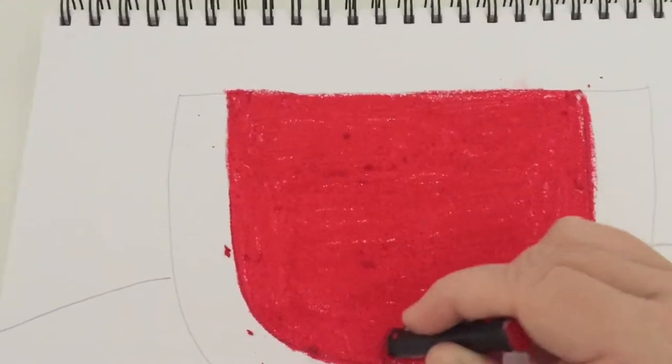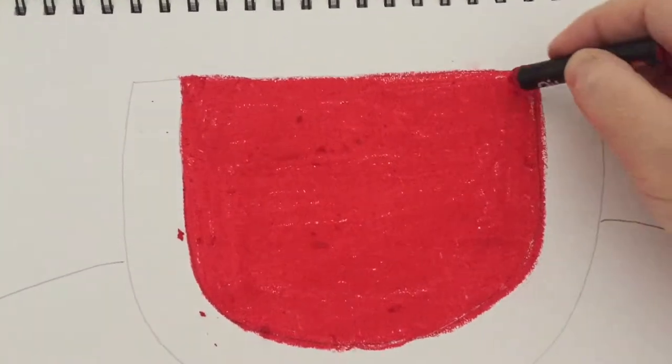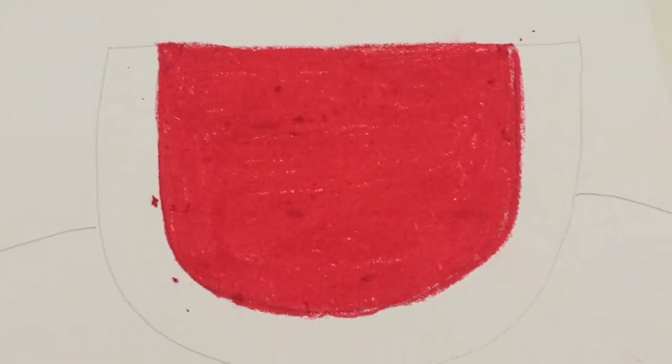We're going to colour that inside part of the semi-circle. We need to colour that whole section in, leaving no white spaces and make sure we've got that nice vibrant warm colour.